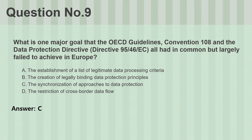Question number nine. What is one major goal that the OECD guidelines, Convention 108 and the Data Protection Directive, Directive 95/46/EC, all had in common but largely failed to achieve in Europe? A. The establishment of a list of legitimate data processing criteria. B. The creation of legally binding data protection principles. C. The synchronization of approaches to data protection. D. The restriction of cross-border data flow. Answer: C.